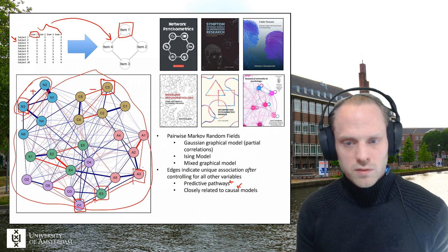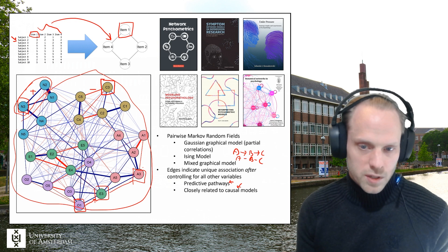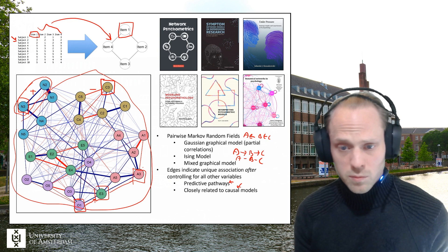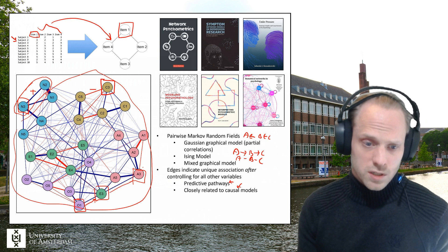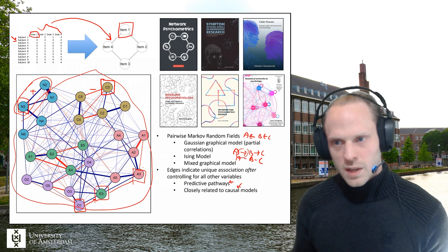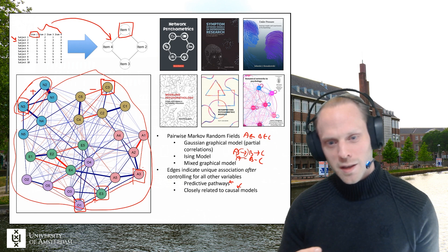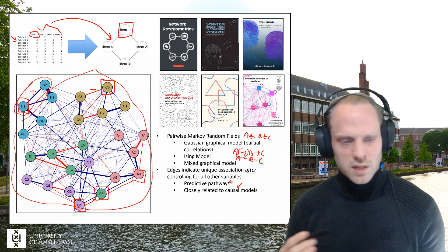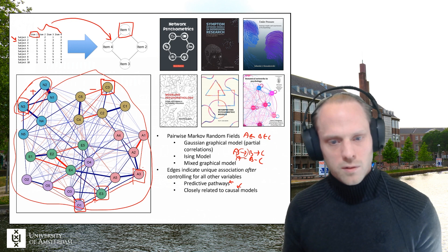Another nice property of these models is that they're very closely related to causal models. If you have an underlying causal model A→B→C, that leads to the same undirected network. But there's a problem: you might have equivalent models — like A←B→C — that produce the same undirected network. So you can't always take a strong causal interpretation because the direction might be unknown. But there is a nice link between these worlds, and you can take a hypothesis-generating approach.